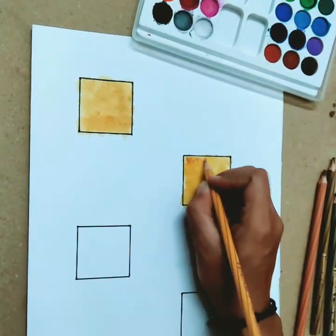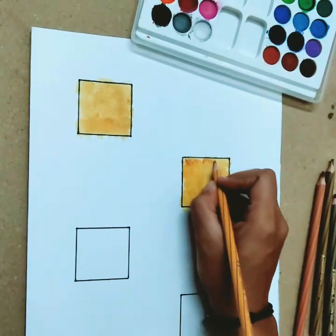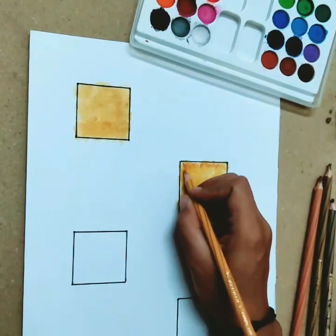Start by creating thin vertical lines repeatedly overlapping one another.